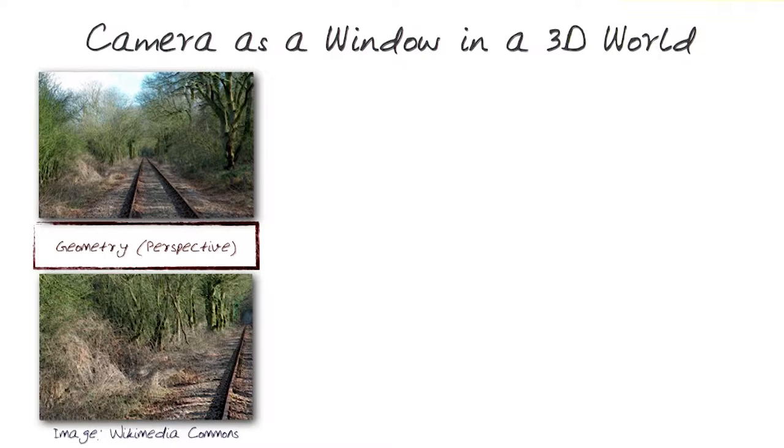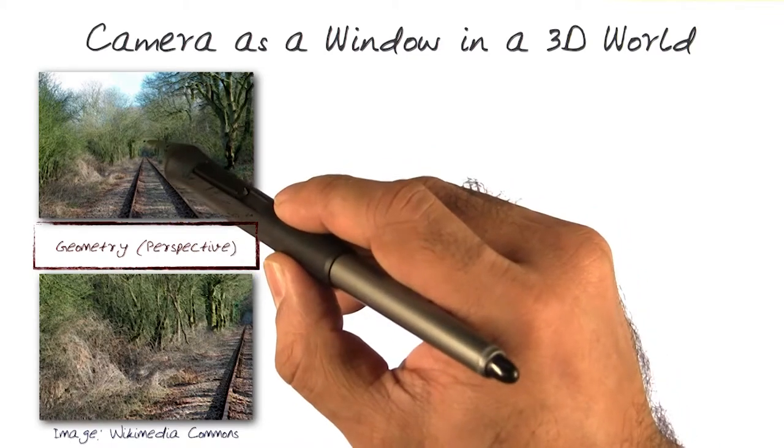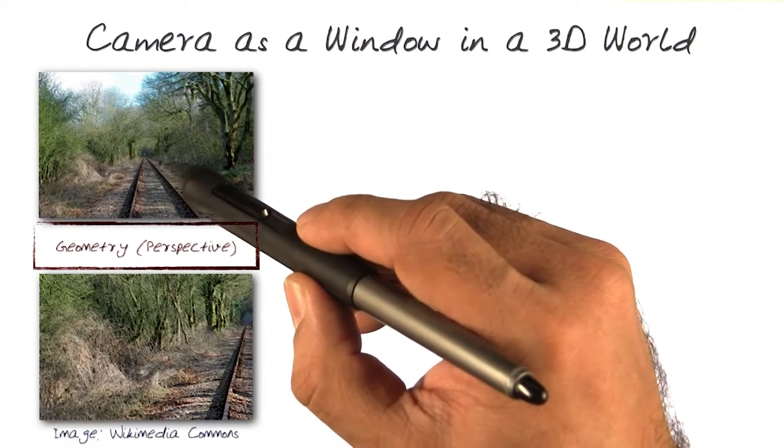But of course, in the case of the camera or the world, it's 3D. So here, for example, the train tracks give you a sense that as you go further away, things are getting smaller and smaller, gives you the concept of perspective.